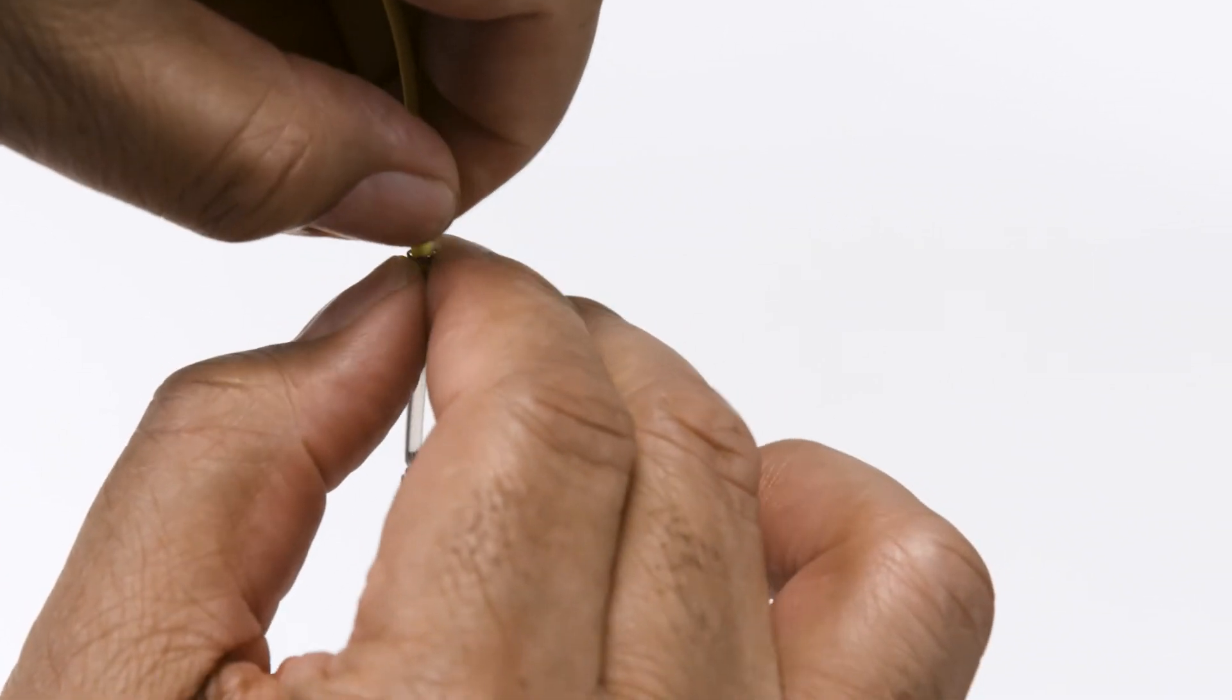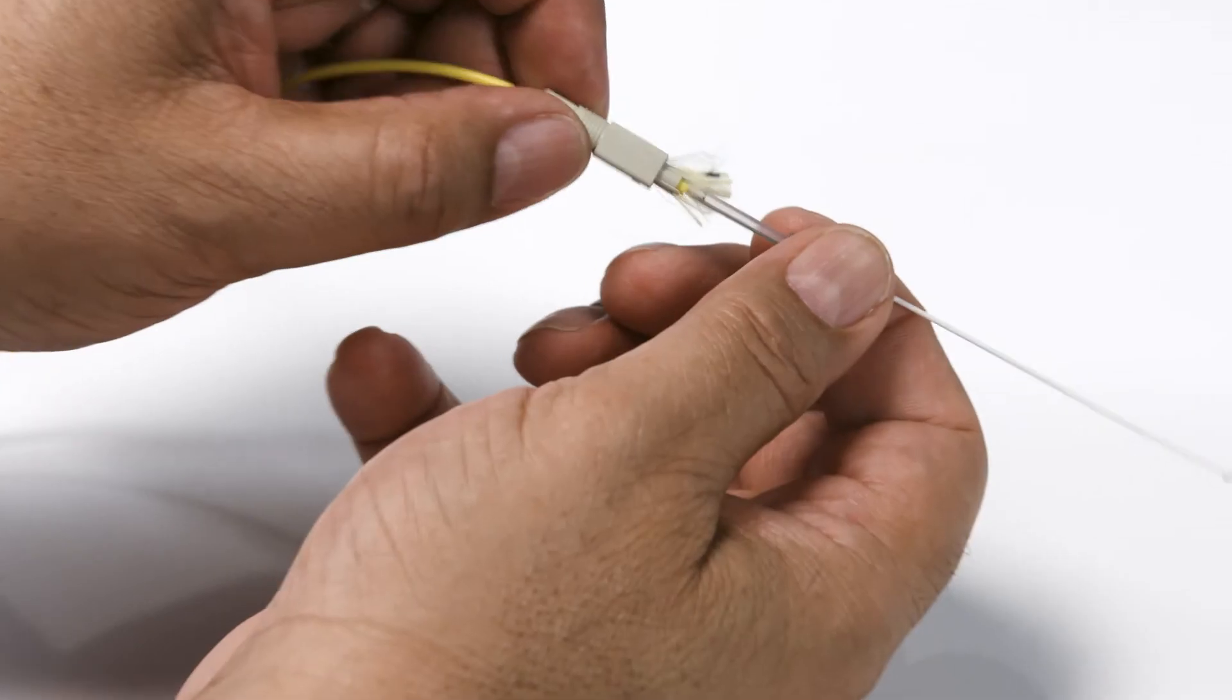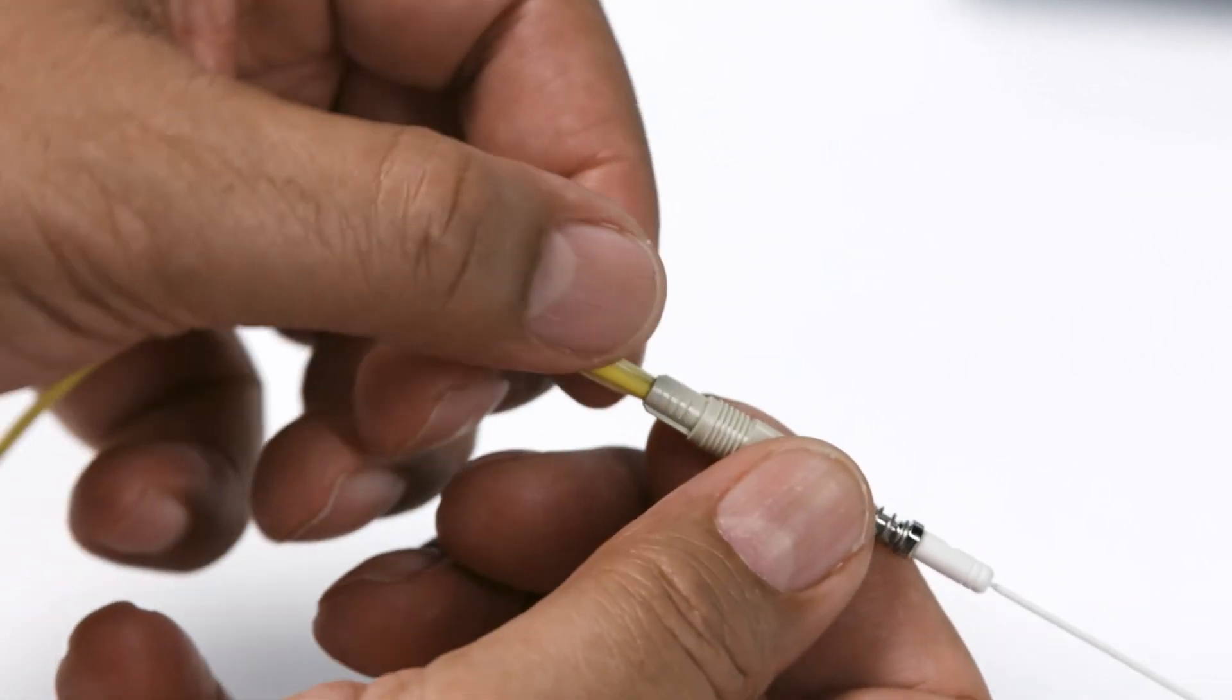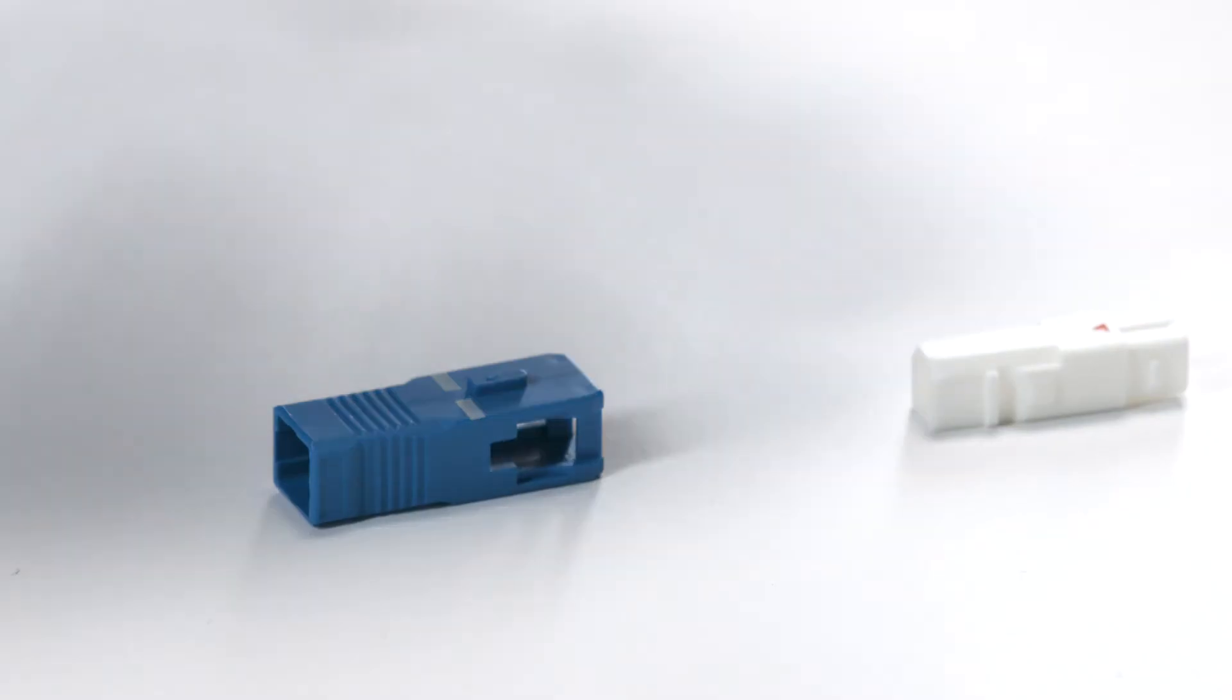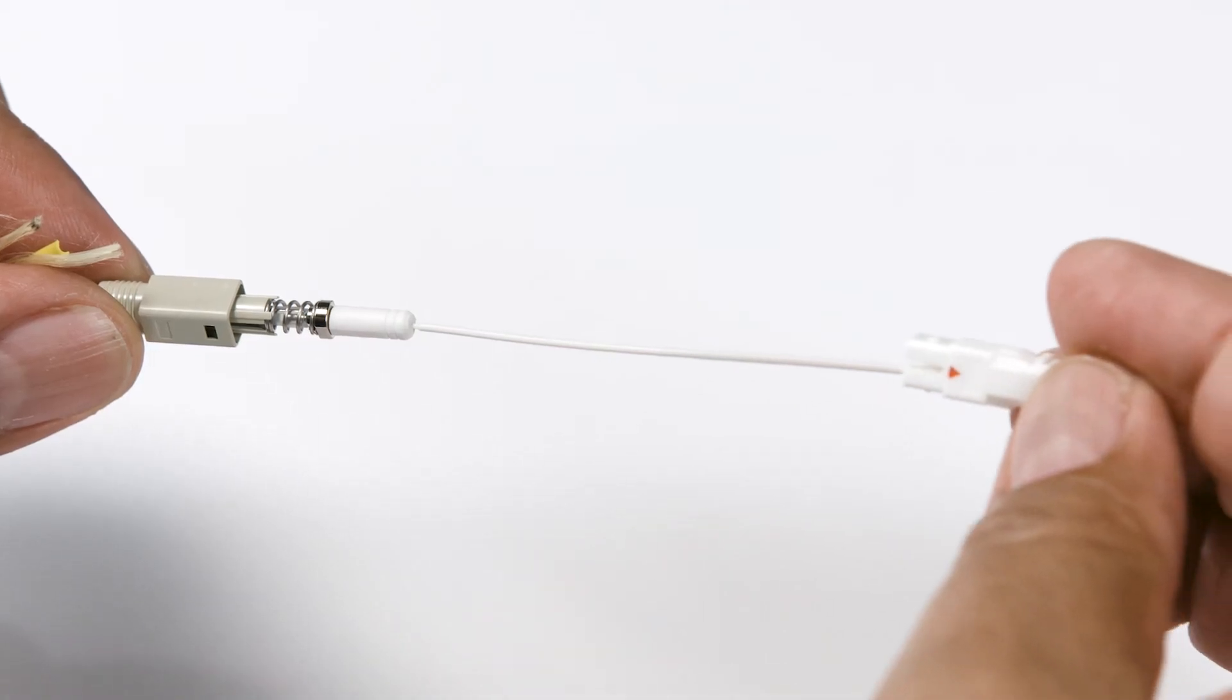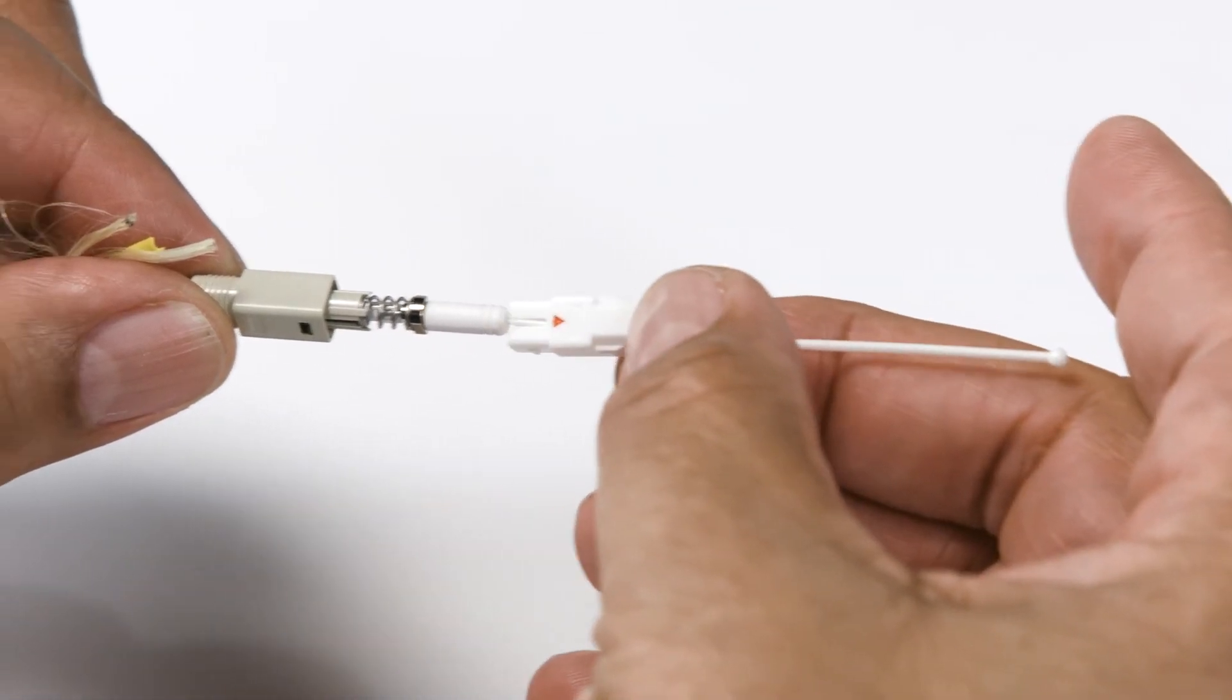Now you're ready to assemble the connector. Bring rear connector components to the sleeve and lightly seat sleeve. Mate front connector components to rear components.